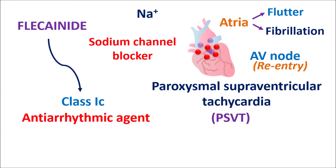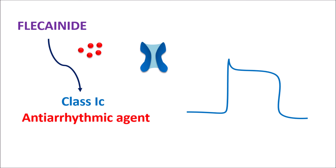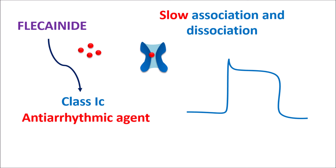Among the class 1 antiarrhythmic agents, Flecainide is classified as class 1c because this drug can block the sodium channels with different kinetics. Under normal conditions, voltage-gated sodium channels are very important to produce depolarization. This is the normal phase of action potential, and here the vertical line indicates the rapid depolarization phase conducted by voltage-gated sodium channels. Flecainide shows a slow rate of association and dissociation with sodium channels. Because of this action, we can observe that the slope of phase 0 is reduced, which indicates that sodium channels are slowly activated.